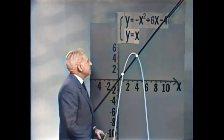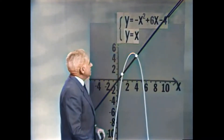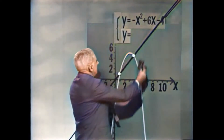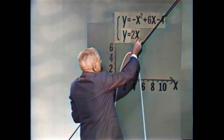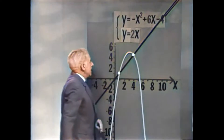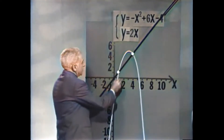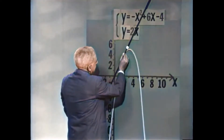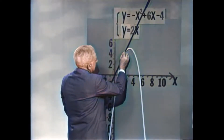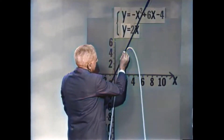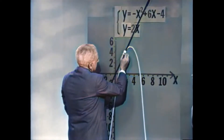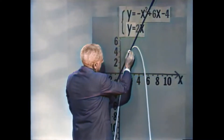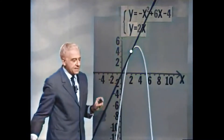y שווה ל-x בריבוע פלוס 6x מינוס 4, ו-y שווה ל-2x. ראינו שיש רק פתרון אחד, והפתרון הוא 2, 4.